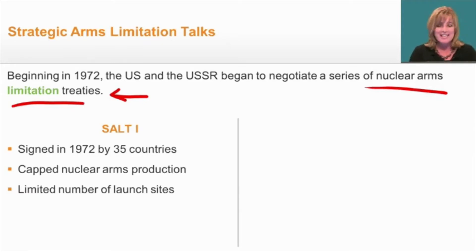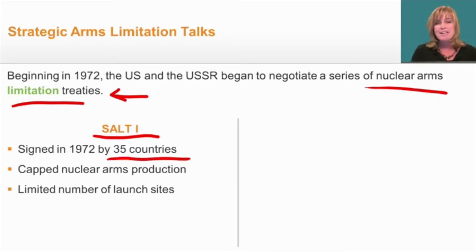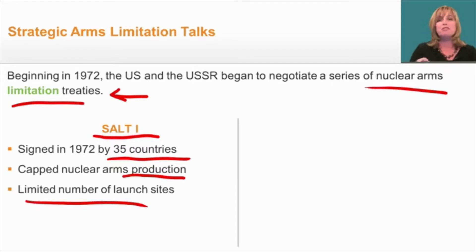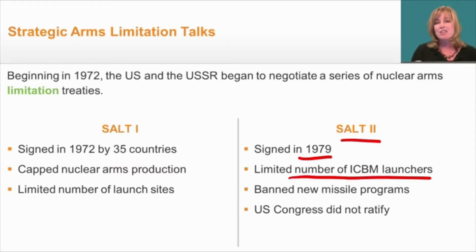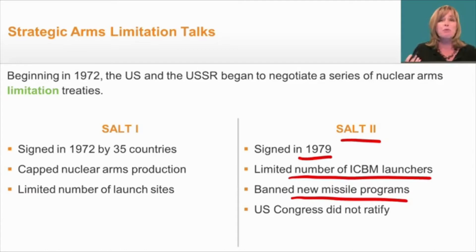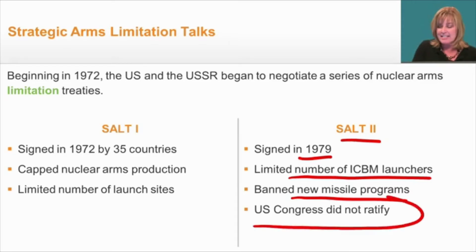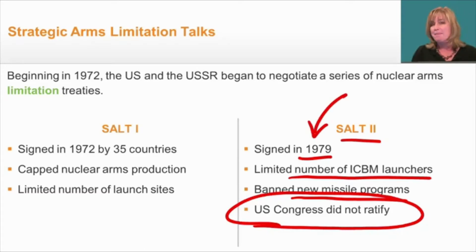Two important treaties were signed in the 1970s. The first, SALT-1, was signed by the U.S., the Soviet Union, and other countries. It capped the number of nuclear arms any nation could produce and also limited the number of launch sites. The second treaty, SALT-2, was signed later in 1979. It limited the number of ICBM launches and banned new missile programs designed to create more powerful or longer-range weapons. Unfortunately, SALT-2 was never ratified by Congress, because in 1979 the Soviet invasion of Afghanistan increased tensions between the two nations once again.